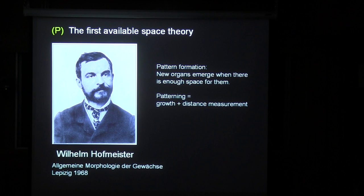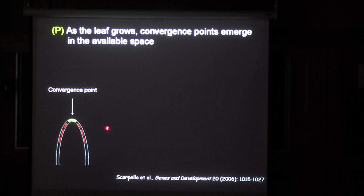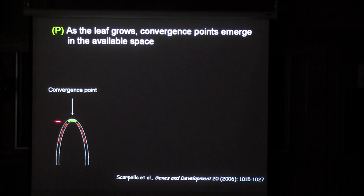One way or another, we have a mechanism for forming convergence points. The question is how these convergence points emerge in the growing margin of the leaf. Here the postulate goes back to the 19th century, when Hofmeister proposed — looking mainly at phyllotaxis, but this is a more general principle — what is known as the first available space theory, according to which new organs are created wherever there is enough space for them. If we apply this to the leaf margin, we have the following situation: we have a small leaf primordium with a convergence point, which was the one that patterned the position of this leaf as part of phyllotaxis. As the leaf grows and the margin expands, space is created for new convergence points.